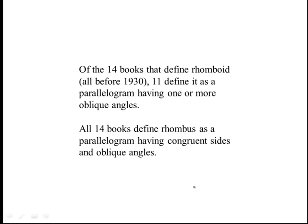Of the 14 books that defined a rhomboid, all before 1930, 11 defined it as a parallelogram having one or more oblique angles — an oblique angle being anything that's not a right angle. All 14 of the books defined a rhombus as a parallelogram having congruent sides and oblique angles.